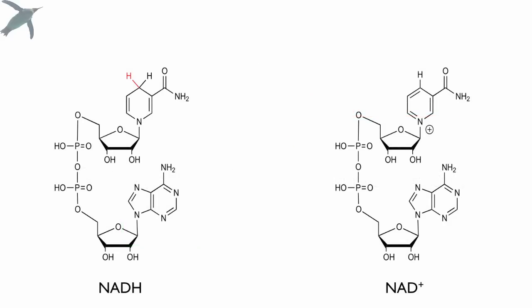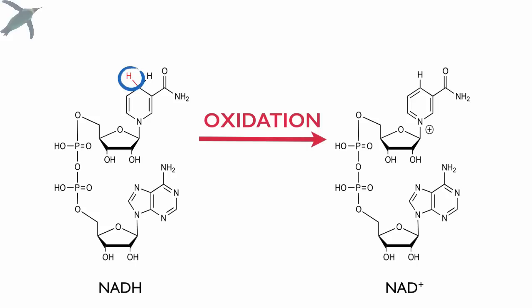Lastly, let's look at an electron carrier. Students hate electron carriers — the NADs and FADs. NADH to NAD+. When you go from NADH to NAD+, just look and see what's happening with that little hydrogen right there. We're losing the hydrogen, so it's being oxidized. When you go the other way, you're gaining that hydrogen — that's the only thing that's changing in these molecules. That's reduction.